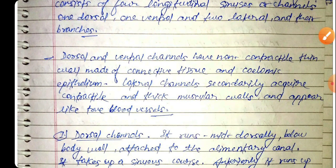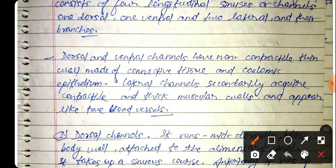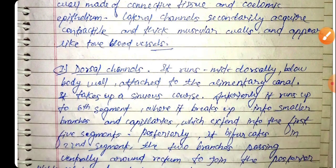The dorsal and ventral channels have a non-contractile thin wall made up of connective tissue and coelomic epithelium. The lateral channels are secondarily acquired contractile walls with dermomuscular walls and appear like true blood vessels.